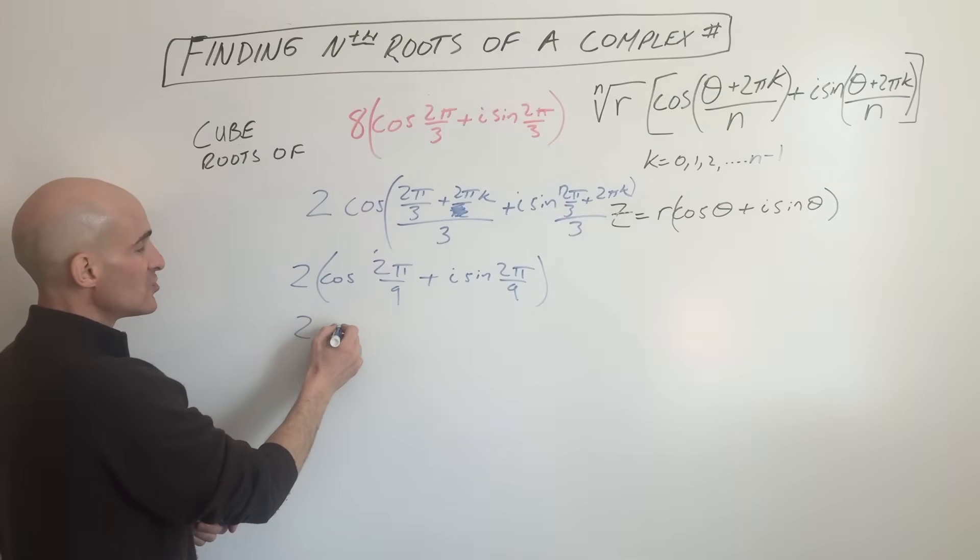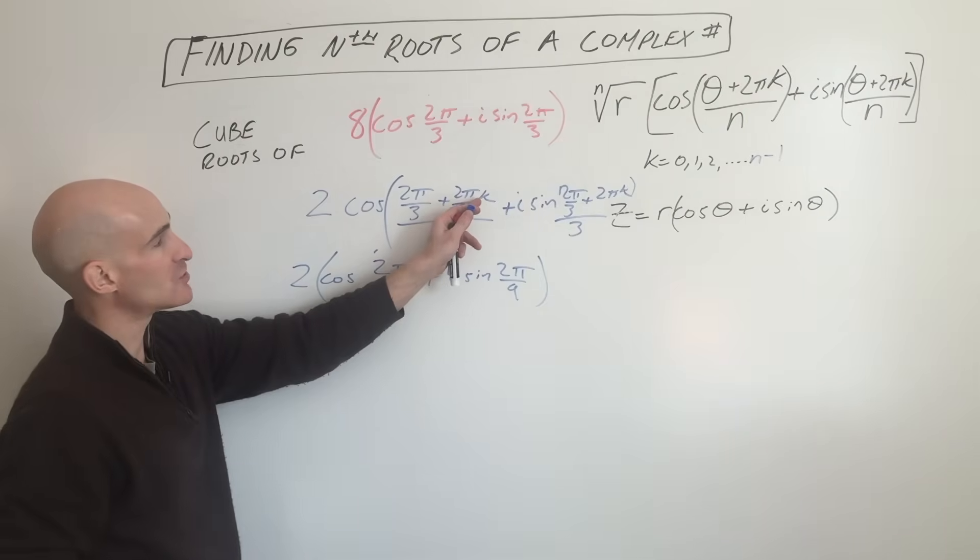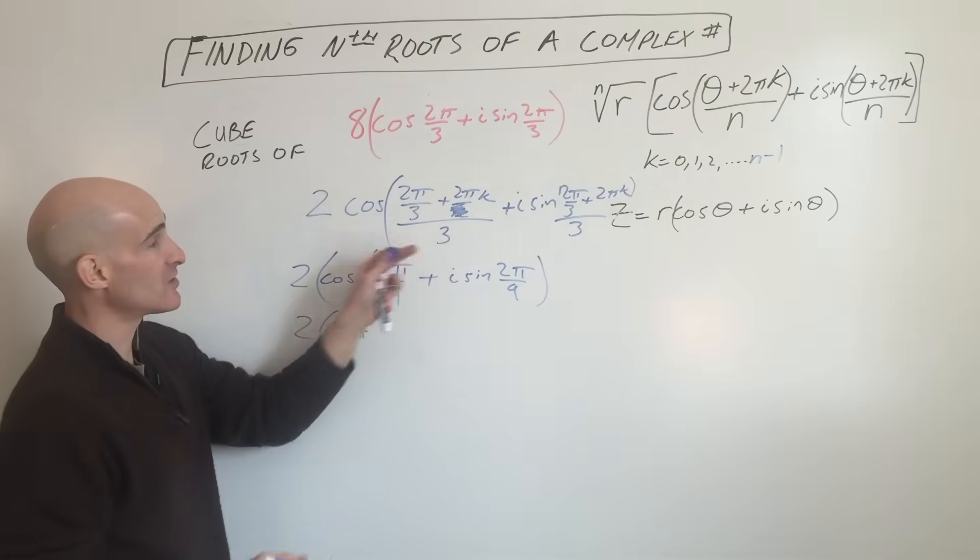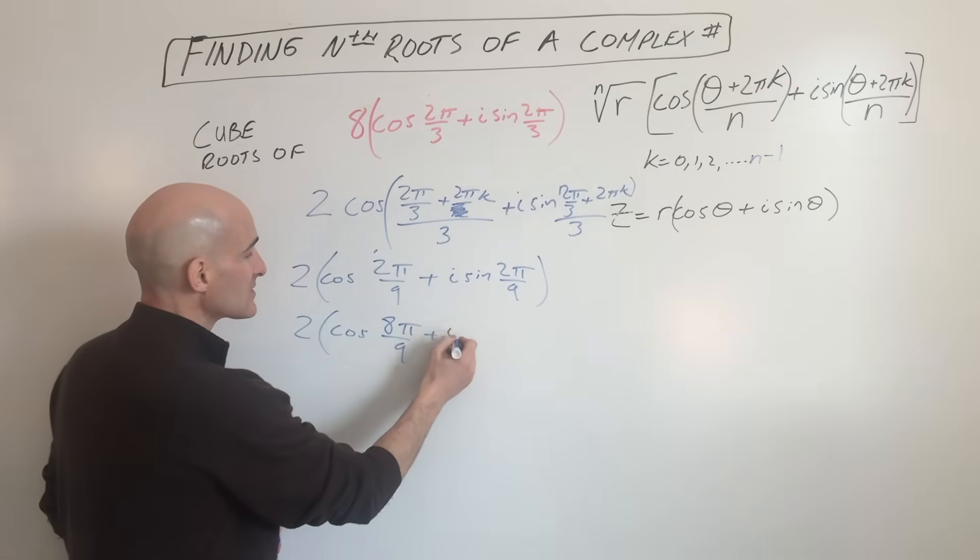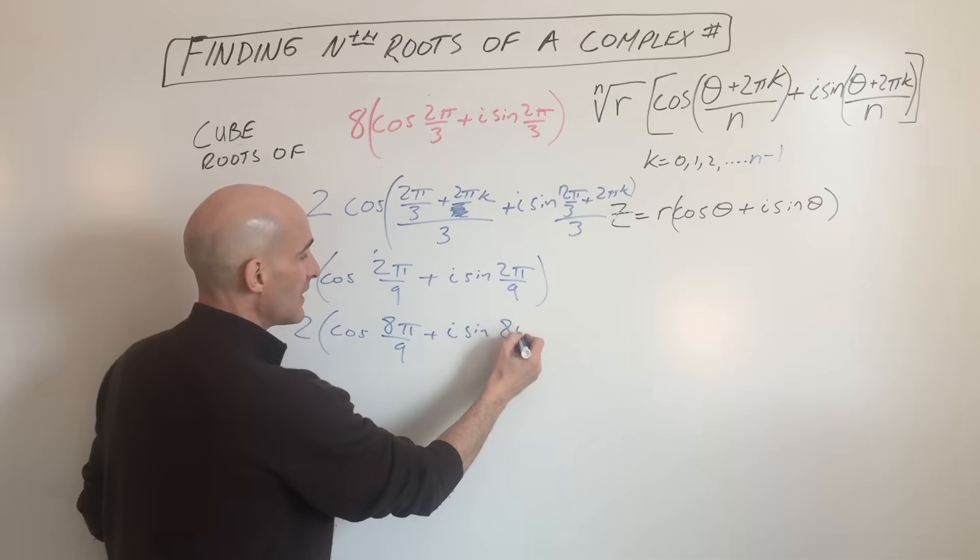The next one is going to be 2 cosine. Now k is 1, so we have 2π, which is actually 6π/3, plus 2π/3 is 8π/3, divided by 3 is 8π/9, plus i sine 8π/9.